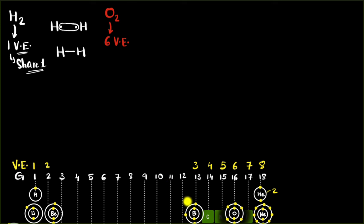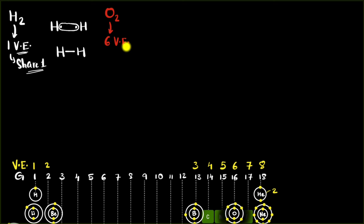That is the case for most elements. For hydrogen it's two, but for most other elements they require eight electrons in the outermost shell. We call this the octet rule. Since oxygen requires eight electrons and it has six, it needs two more. If you need two, you share two.